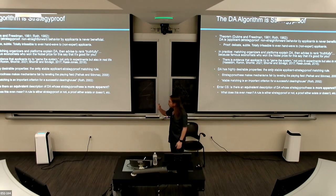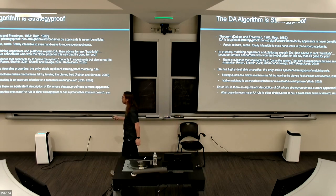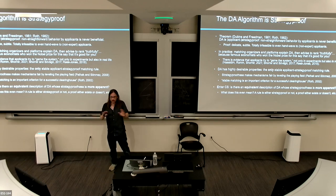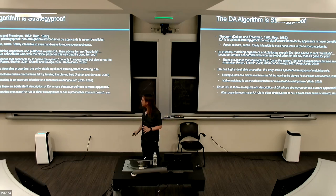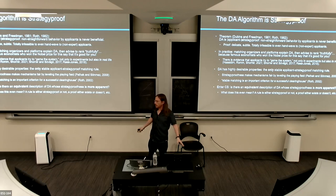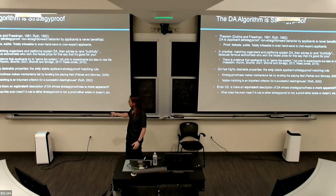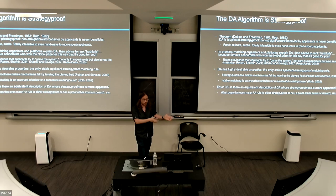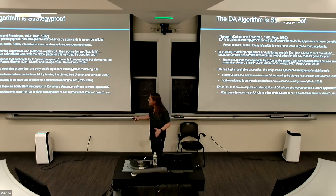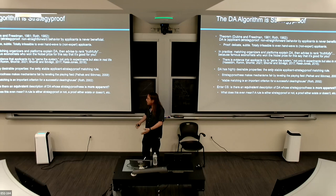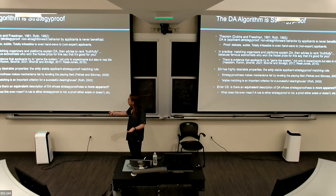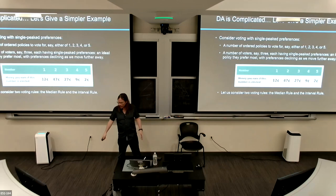We have evidence that applicants try to game the system — not only in lab experiments but in real high-stakes situations. DA is the only way to select a matching that is both stable and strategy-proof. If you want stability and no need to strategize, you're stuck with deferred acceptance. But the proof is hard. So we ask: is there an equivalent description of deferred acceptance — the same mapping from preferences to outcomes — that makes strategy-proofness more apparent?